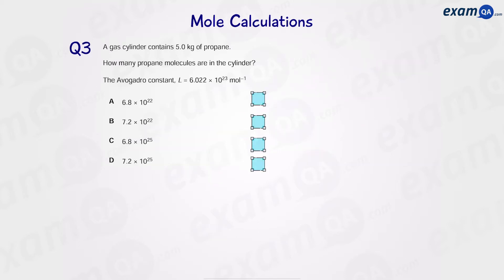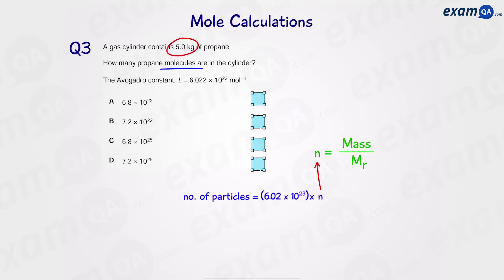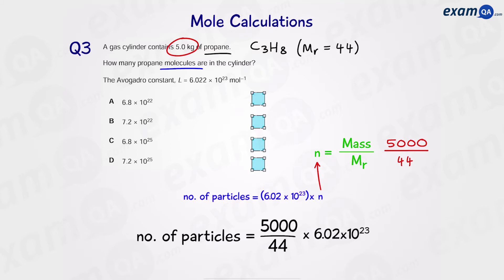Question 3: a gas cylinder contains 5 kilograms of propane — how many propane molecules are in the cylinder? We want number of molecules, so we use: number of particles equals Avogadro's constant times number of moles. We haven't been given moles, so we use the mass: 5 kilograms equals 5000 grams. The Mr of propane C3H8 is 44. Mass over Mr gives moles, then moles times Avogadro's constant gives number of particles. This matches with C.